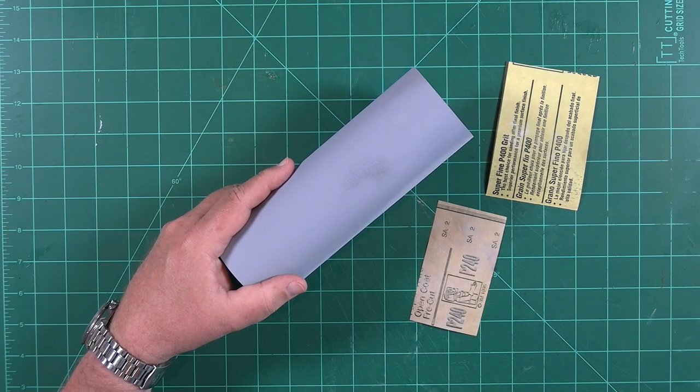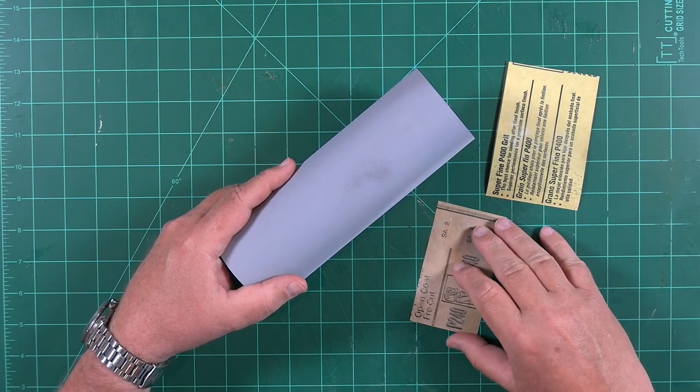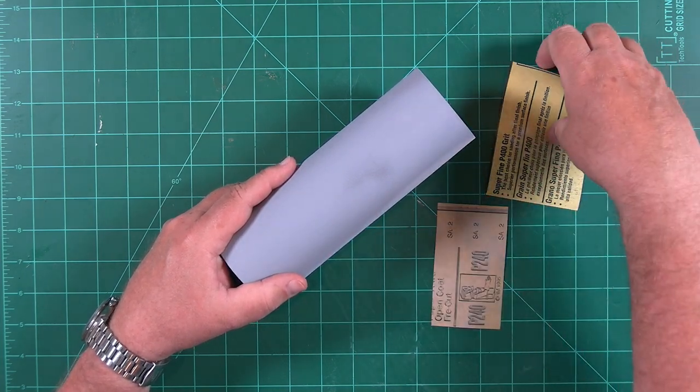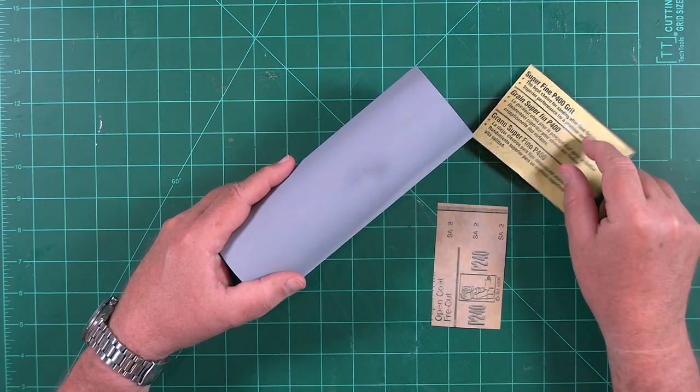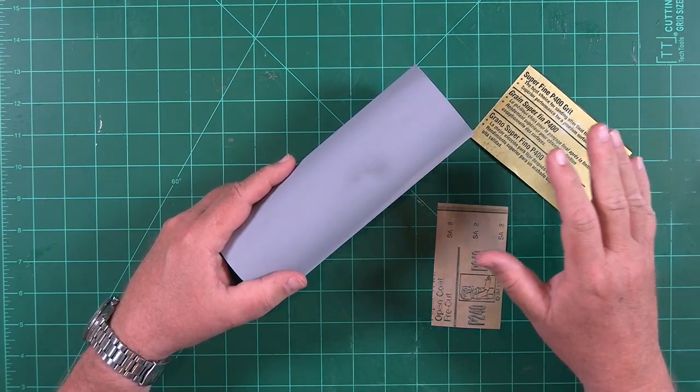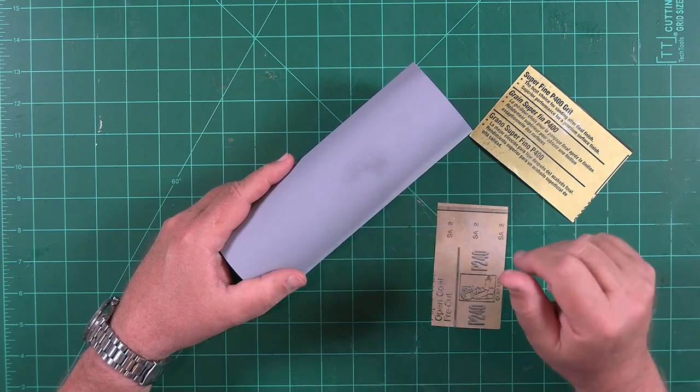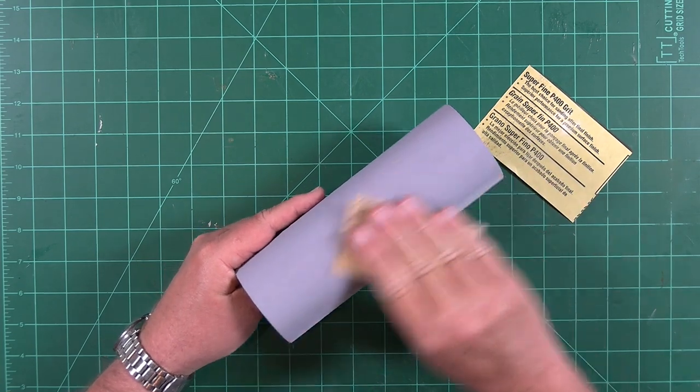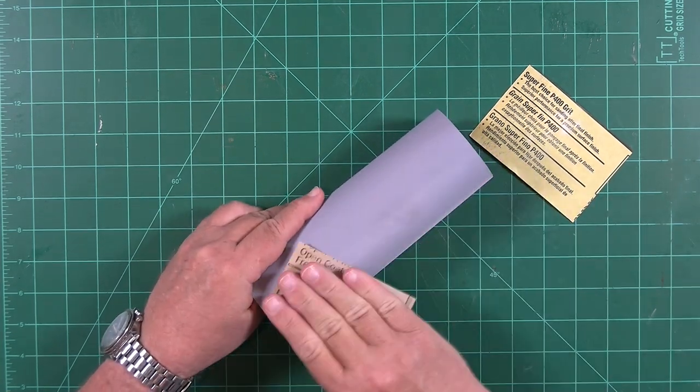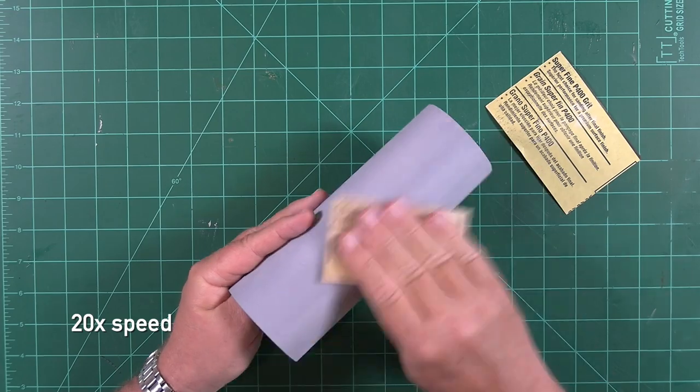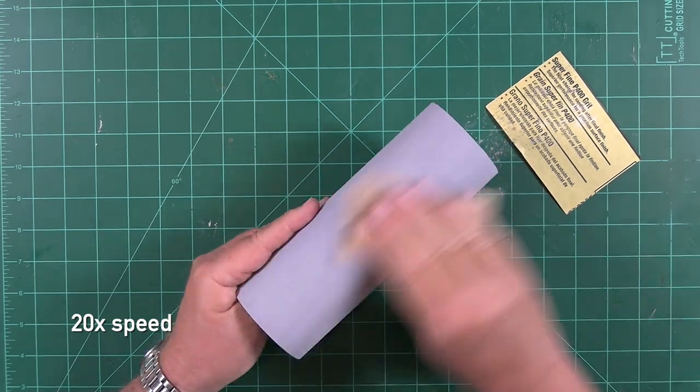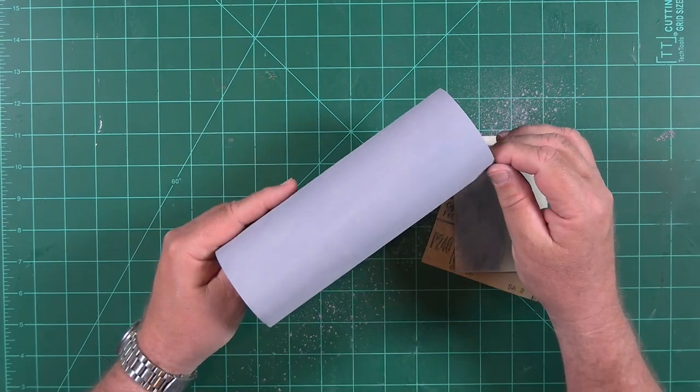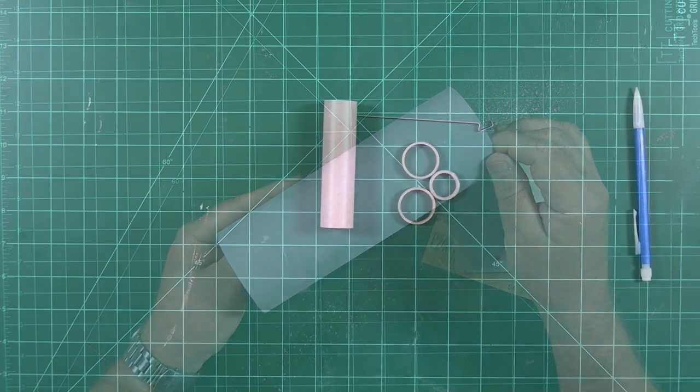Okay, our primer has dried and now we can start sanding. I like to start with 240 grit paper and then move to 400 grit paper. If we do this properly, we'll remove most of the primer in the process.